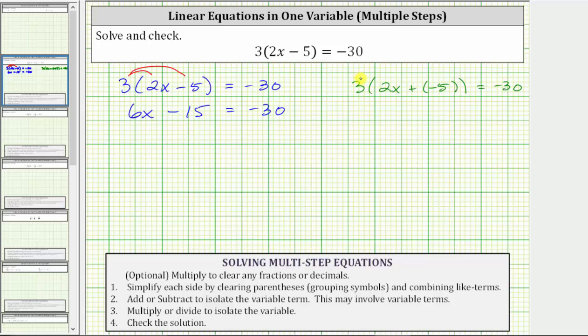If we distribute three in this form, three times two x is six x, we have six x plus three times negative five is negative 15 equals negative 30. And we know that plus negative 15 is equivalent to minus 15.